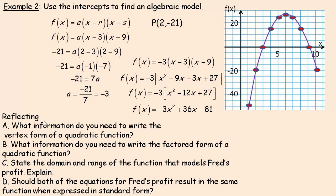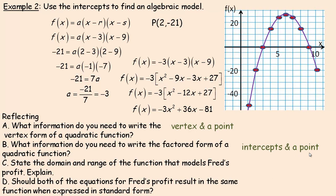A quick summary: to write the vertex form of a quadratic function, you need the vertex and one additional point — the point lets you find the stretch factor A. For factored or intercept form, you need the two intercepts and again one additional point to find A.